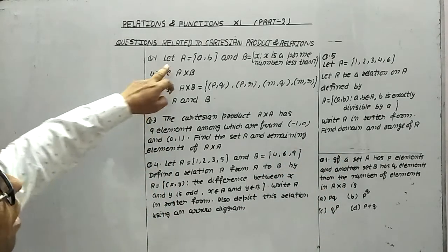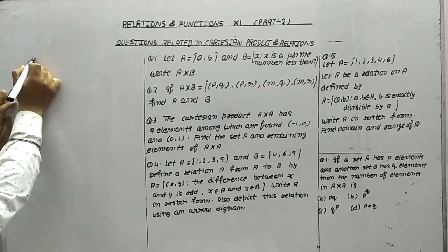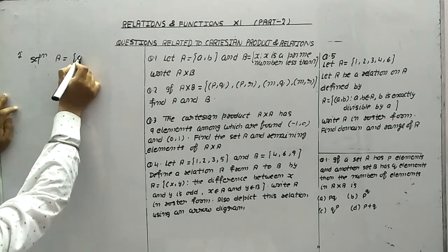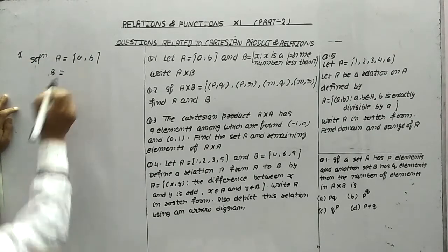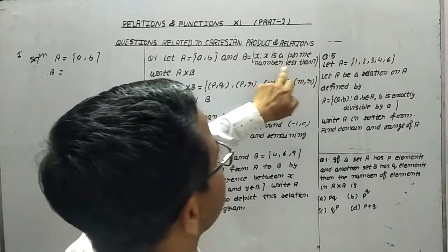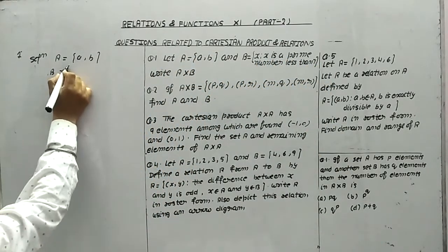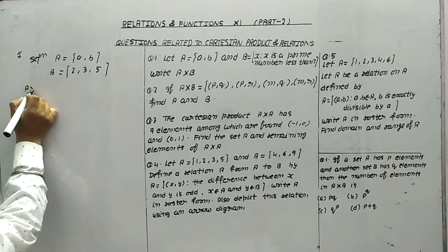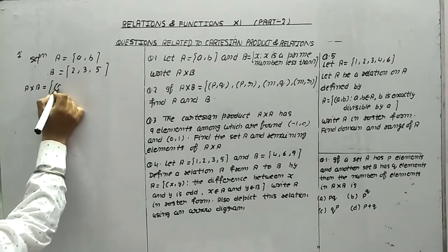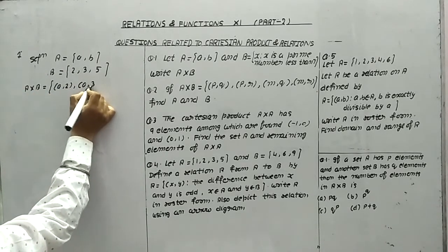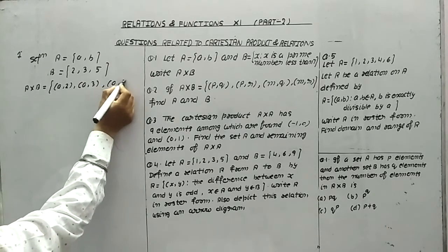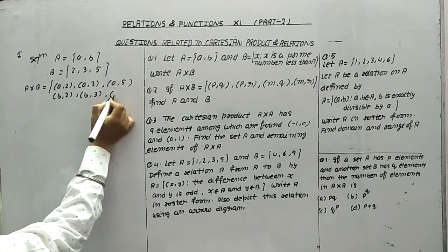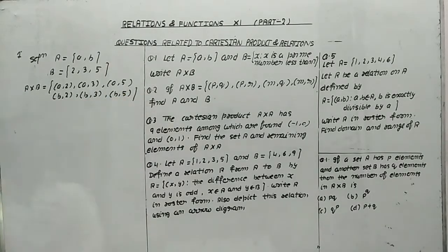Question number one: we have a set A in which the elements are {a, b}, and the set B in which the elements x is a prime number less than 7 — meaning 2, 3, and 5. Now we have to write down A cross B. You know very well how to write A cross B: (a,2), (a,3), (a,5), (b,2), (b,3), (b,5). So this will be the answer of A cross B.